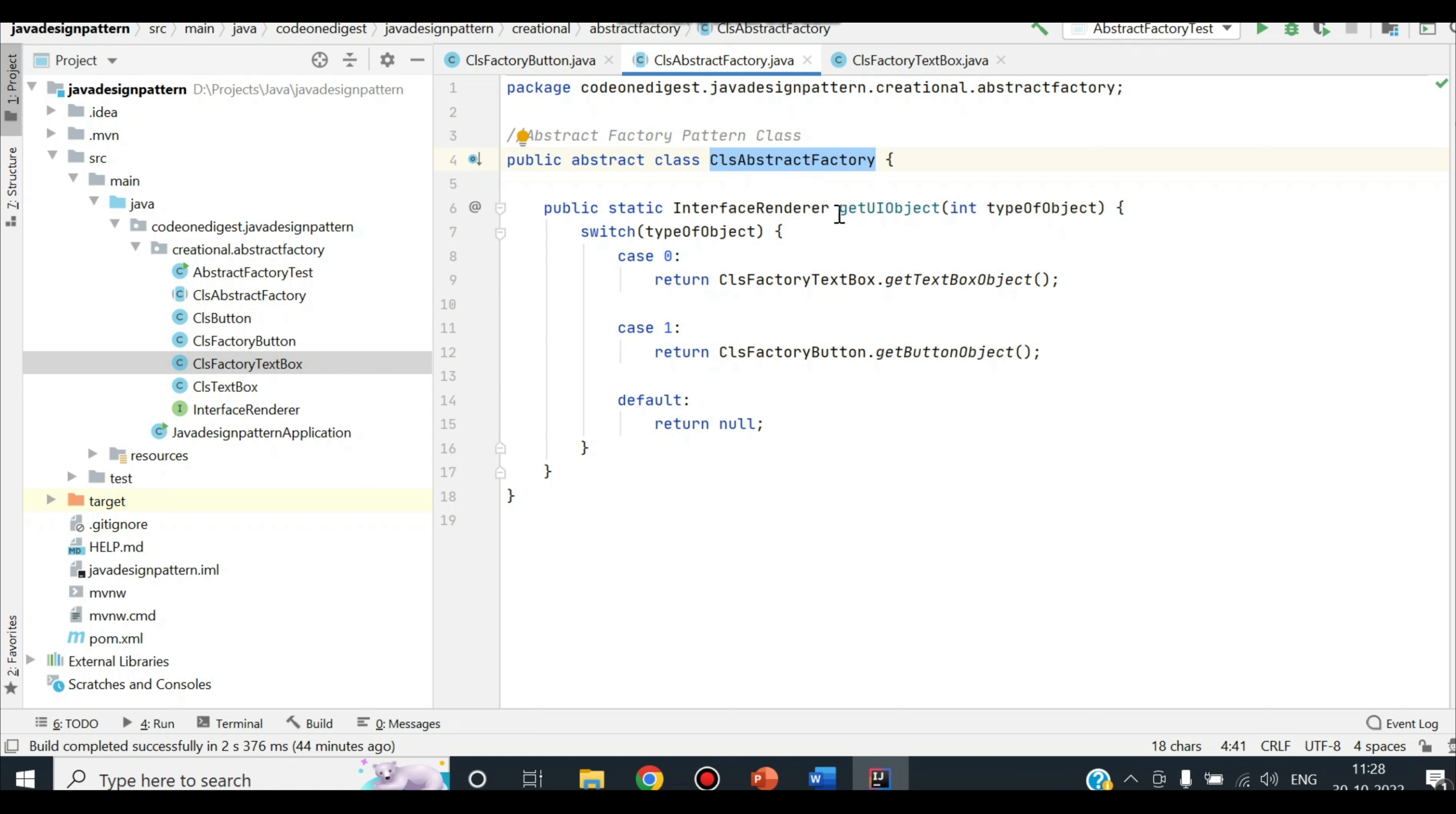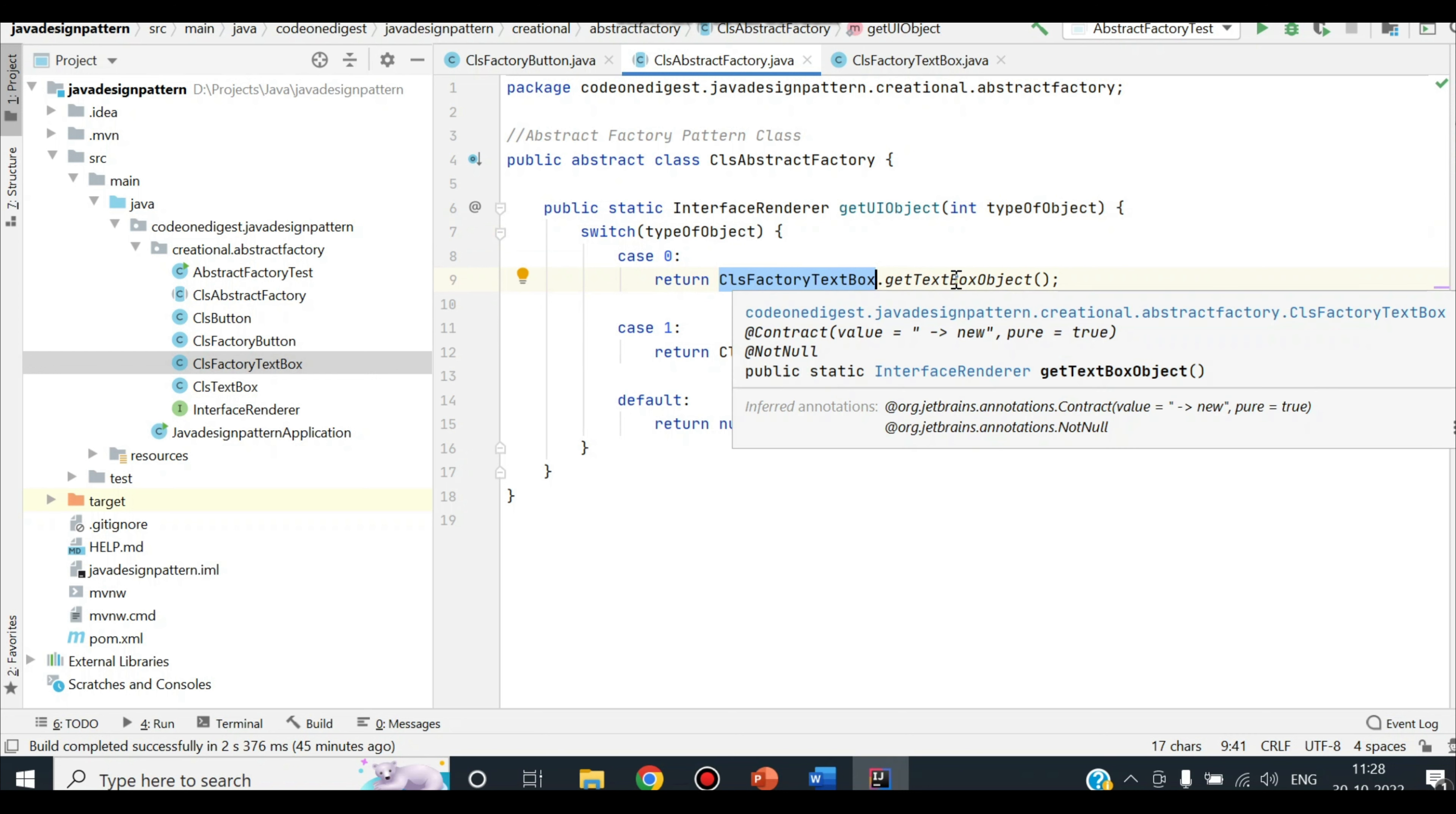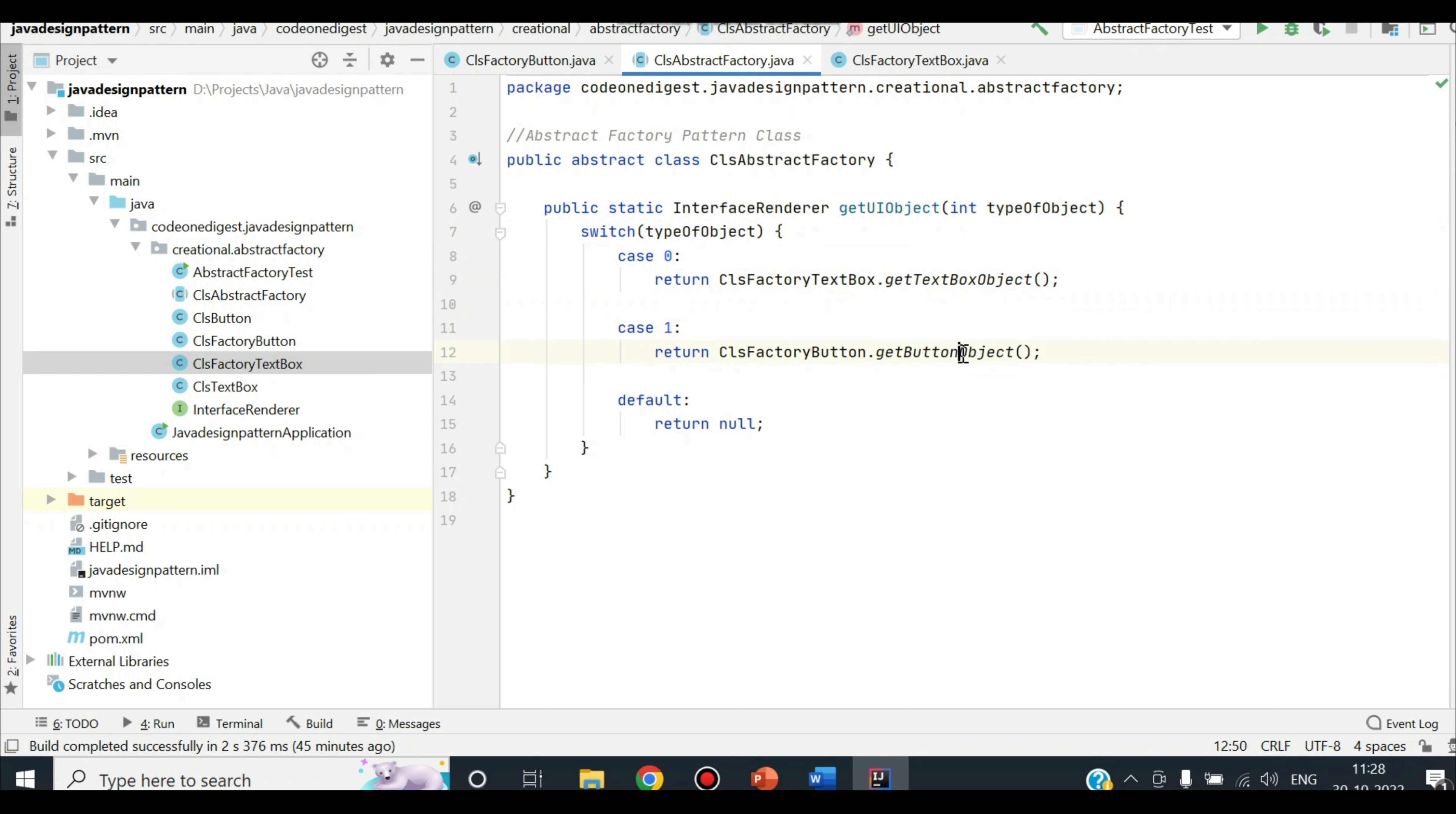This is our abstract factory pattern implementation. All the clients will be interacting with this abstract class and with this method by providing an input. Once they call this static method based on the input, we are going to call the respective factory to get an instance of that object. So for a zero input I will get text box object. For one input I will get button object.